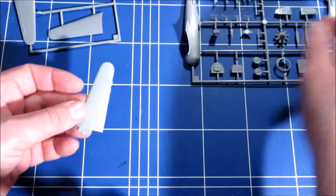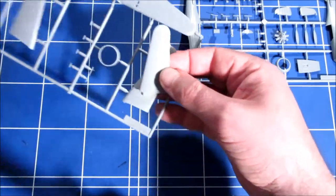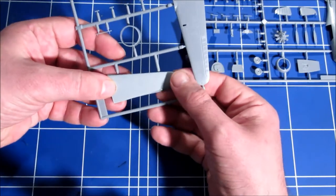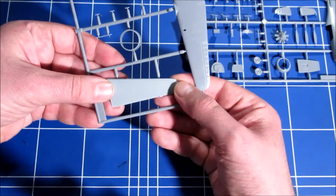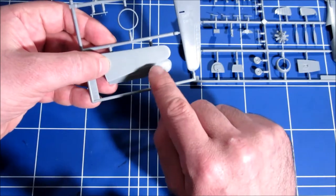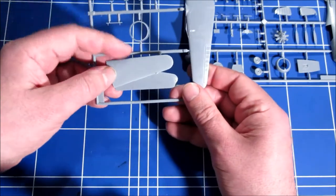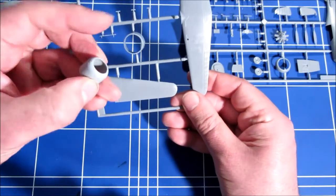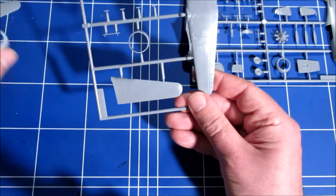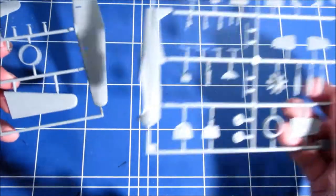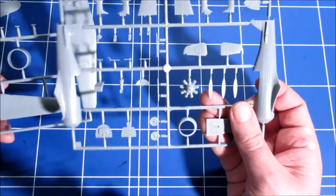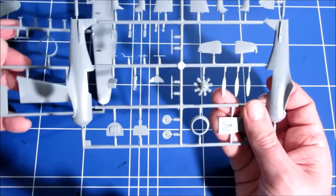Because also with this kit some parts aren't too far off shape wise. It's like, meh, you could correct this a bit. Like the ailerons, you could scribe them yourself. The engine, it's the correct diameter on the PM one. So you can work with it by using this one, the MPM kit, as a pattern.